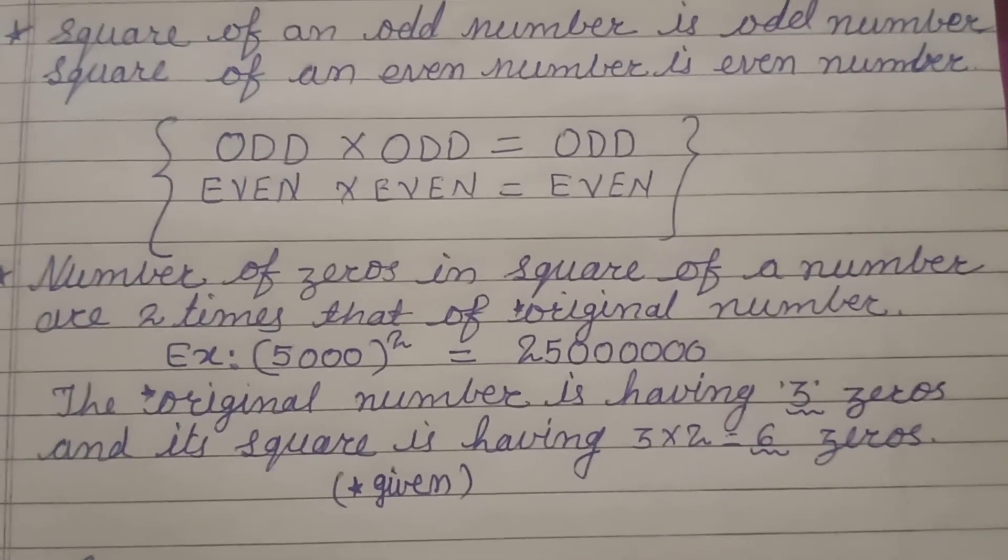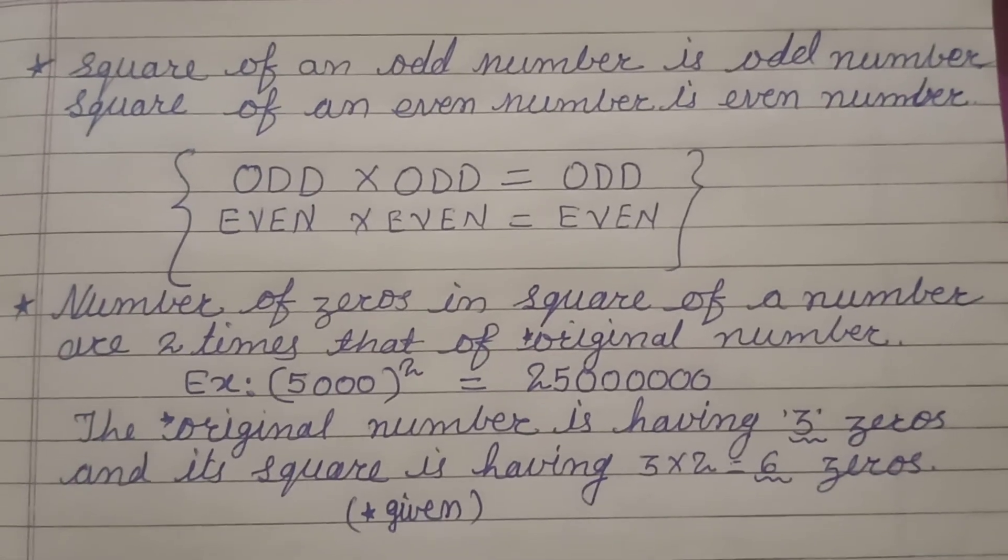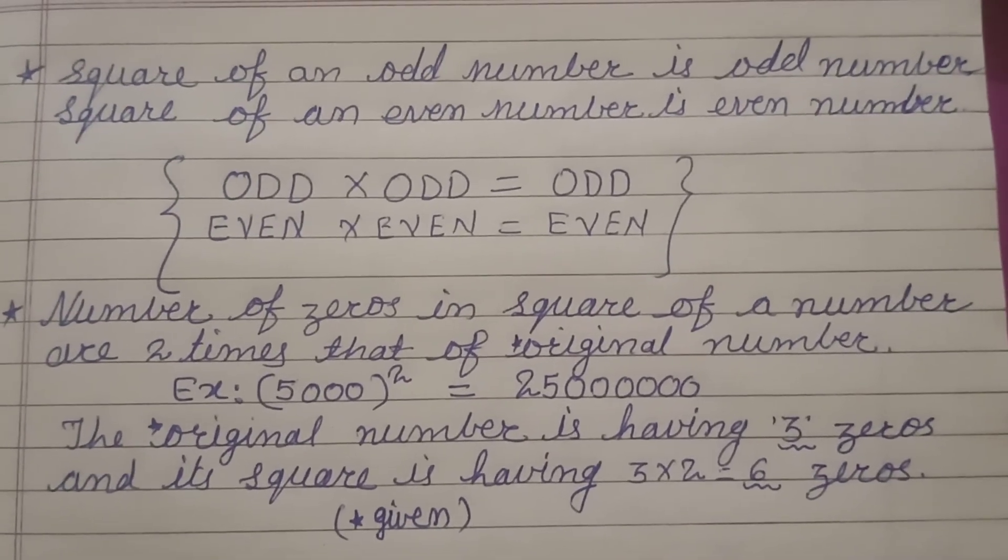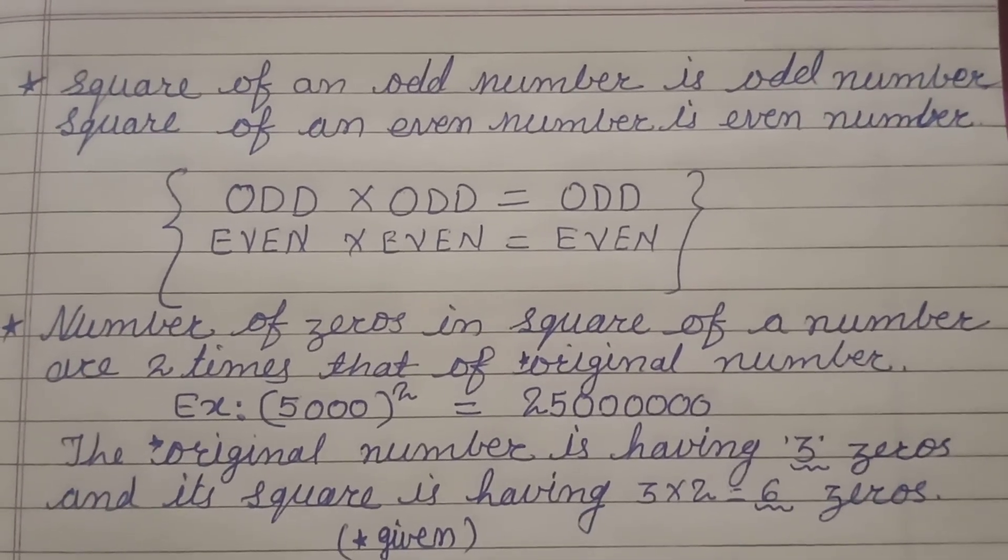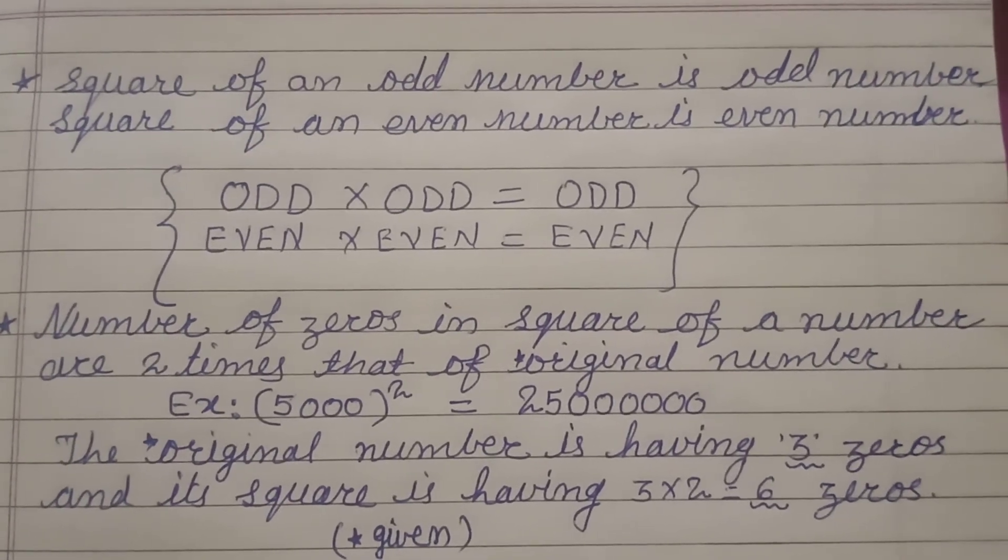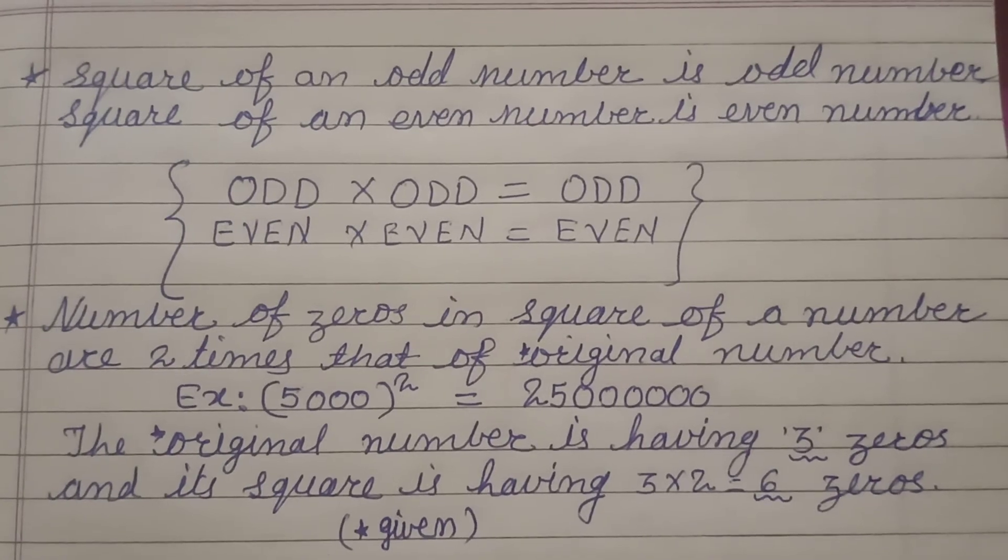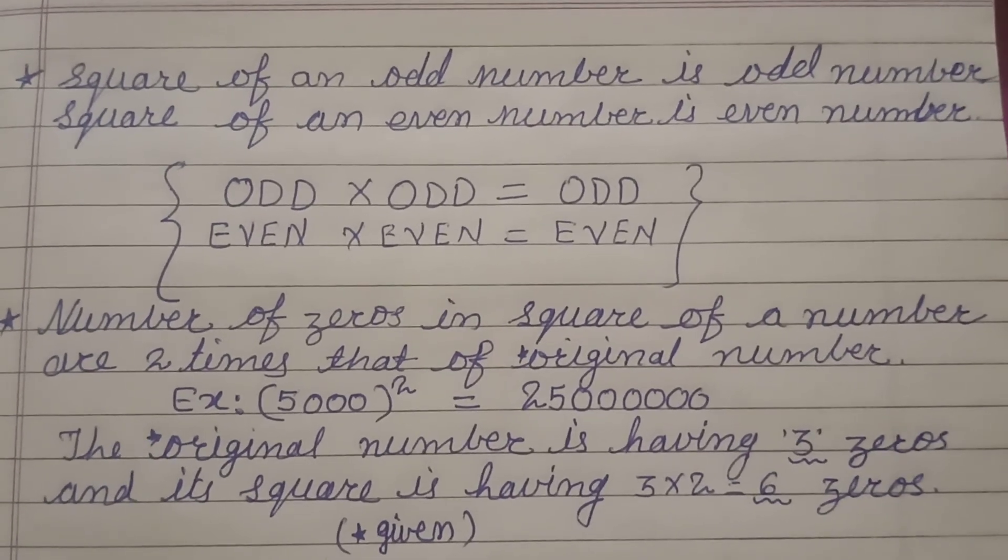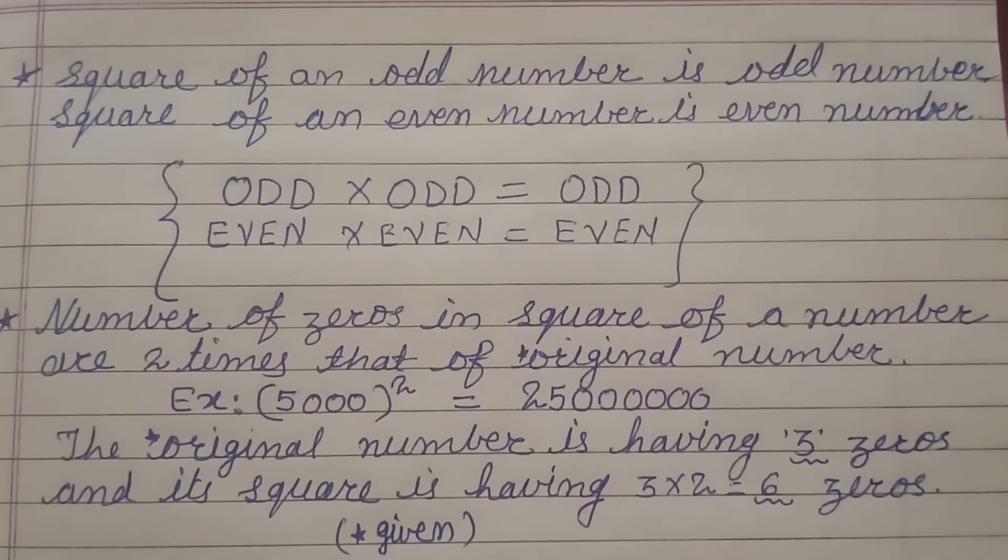So you can easily find out 3 things now. If an odd number is given you can say that square of the number is odd. If even number is given you can say square of the given number is even. And if a number ending with 0 is given you can say how many zeros will be there in the square of the number.